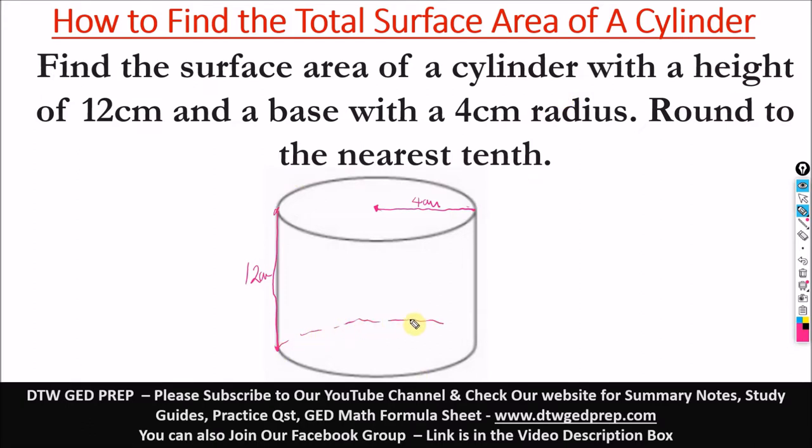Remember, a cylinder has two bases. So a cylinder is like a tin of tomatoes or a tin of baked beans and all that. That's a cylinder shape, a three-dimensional figure. So we have two bases.